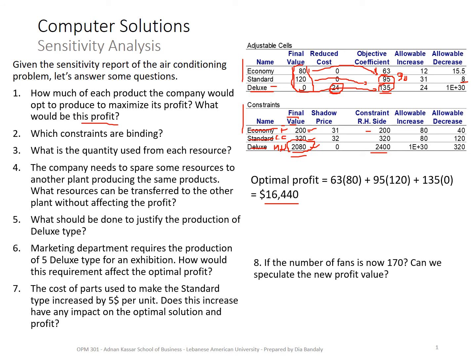Question 8: if the number of fans is now 170, can we speculate the new profit? We went from 200 to 170 fans — that's a decrease of 30. We compare that to the allowable decrease, which is 40. Since 30 is within the allowable decrease, the dual price is applicable. Because there was a decrease in the right-hand side, the optimal value would decrease by the dual price of $31 times 30.